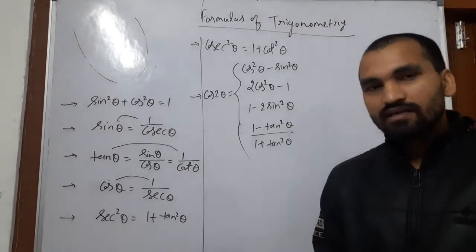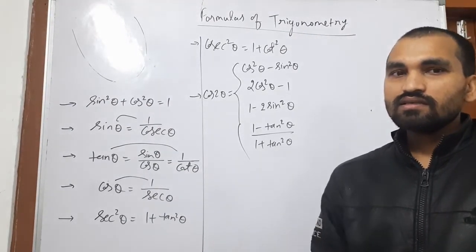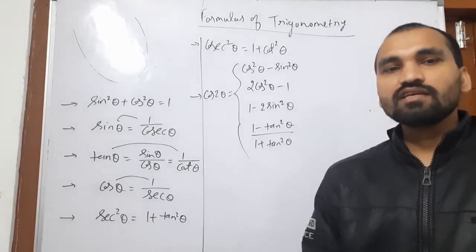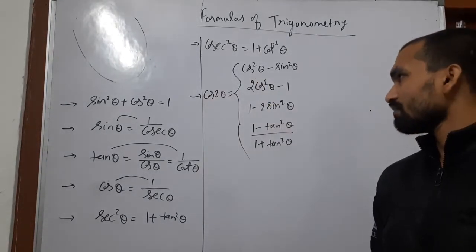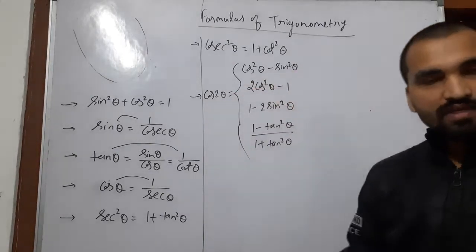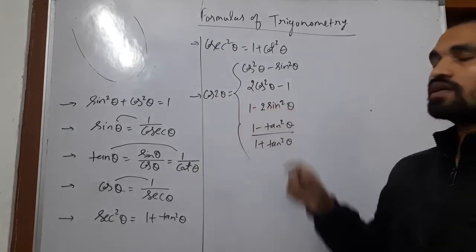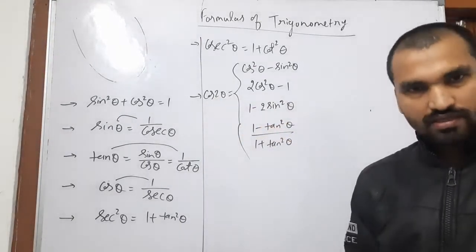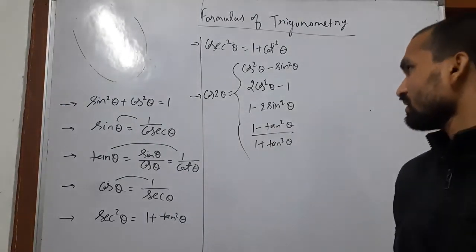We should have an idea about which identity will be used in our solution — this comes through more practice. The formulas for cos 2 theta are: cos 2 theta equals cos square theta minus sin square theta; also cos 2 theta equals 2 cos square theta minus 1; cos 2 theta equals 1 minus 2 sin square theta; and cos 2 theta equals 1 minus tan square theta divided by 1 plus tan square theta.